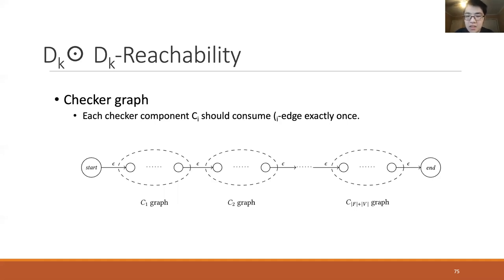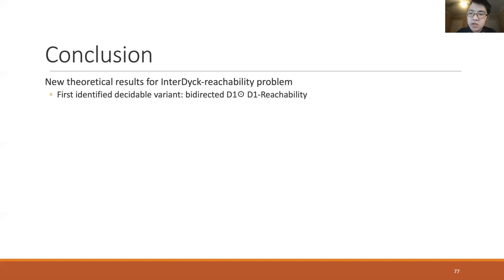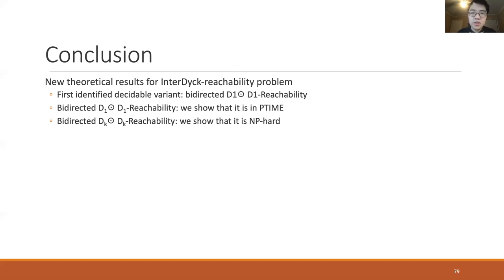The PAFP problem has an accepting path if and only if the end node of the checker graph is DkDk reachable. In conclusion, in this work we provide new theoretical results for interdyke reachability problems. We identify the first decidable variant: the bi-directed D1D1 reachability, show it is in polynomial time, and also show that the bi-directed DkDk variant is NP-hard. Thank you.